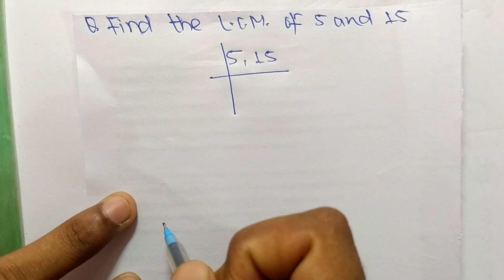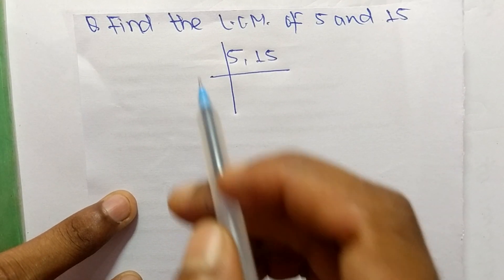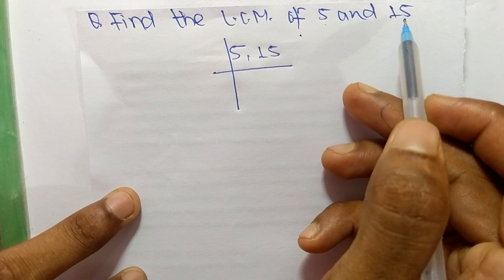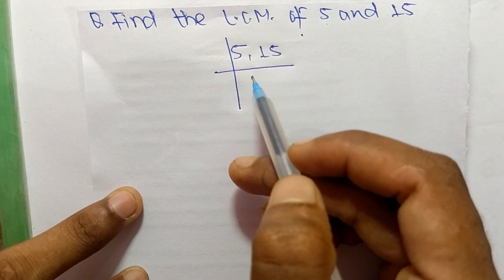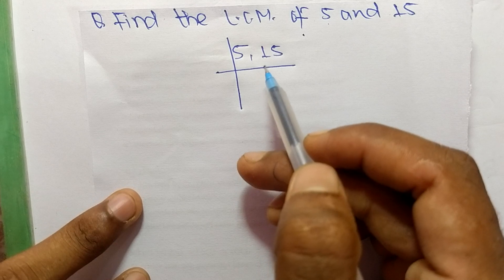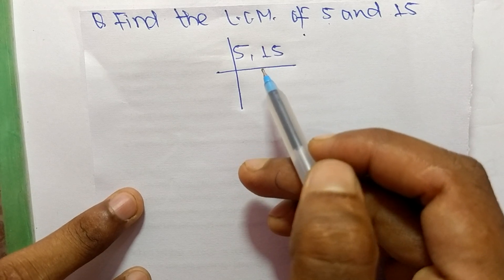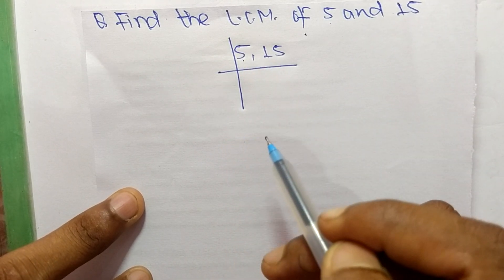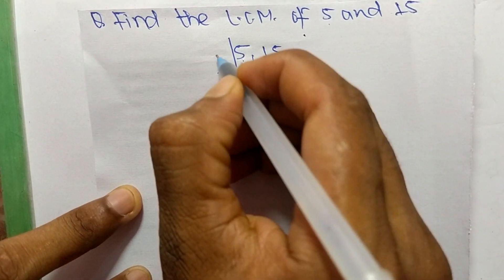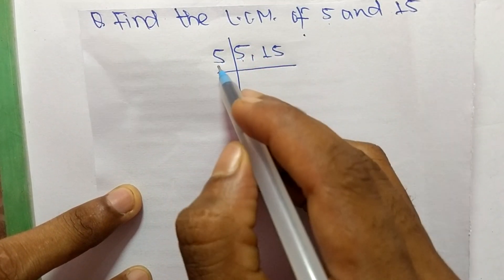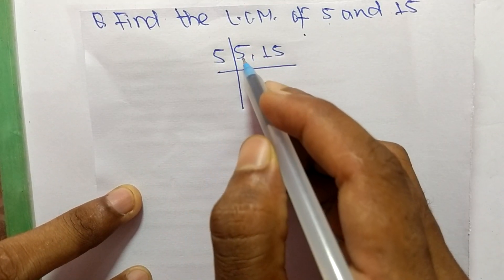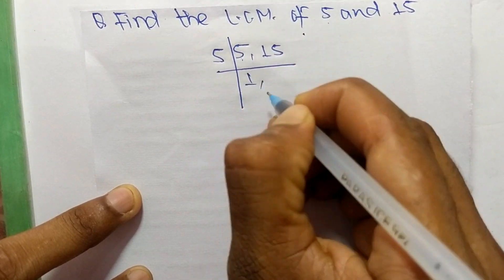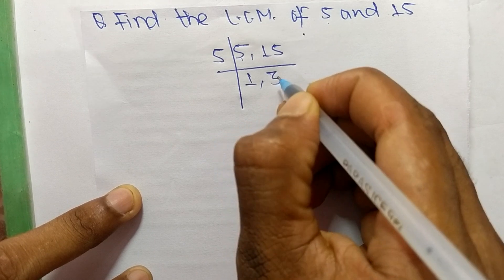Today we shall learn to find the LCM of 5 and 15. First, we choose the lowest number which can exactly divide both 5 and 15. The lowest number is 5, so 5 can divide both numbers: 5 times 1 is 5, and 5 times 3 is 15.